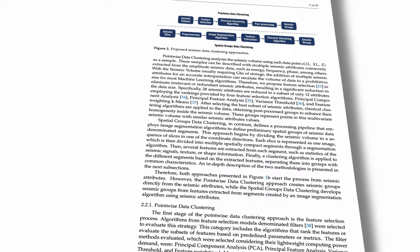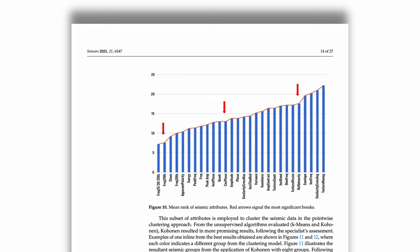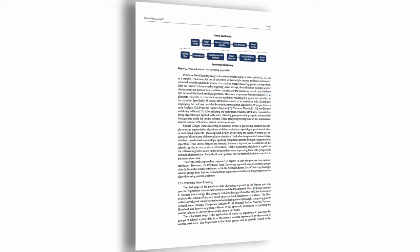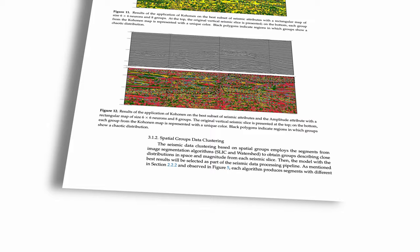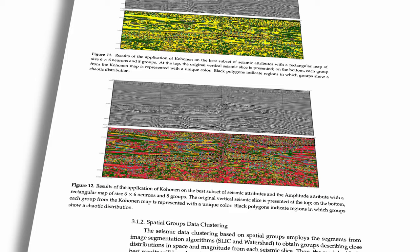Therefore, they propose feature selection to eliminate irrelevant or redundant seismic attributes. Starting with 28 seismic attributes, they reduce the subset to only 12 based on a weighted score from spatial algorithms that examine the importance of each attribute. After selecting the best subset, they apply a classical clustering algorithm. The groups formed by point-wise data clustering outline seismic components with similar characteristics, but the group behavior can be chaotic — an undesirable feature. As a result, the performance of point-wise clustering is regarded as limited.